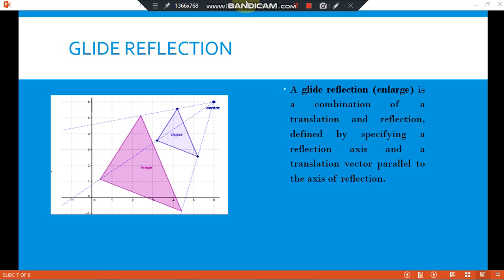Earlier, the reflection was plainly reflection. But with the glide reflection, it is a combination of translation and reflection, defined by specifying a reflection axis and a translation vector parallel to the axis of reflection.